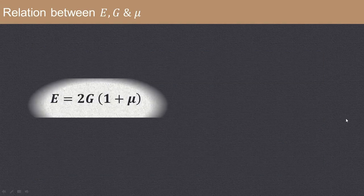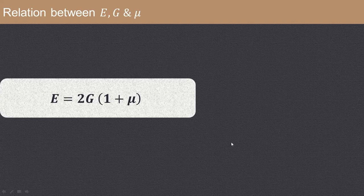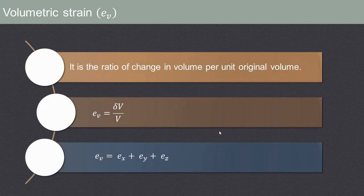The relation between modulus of elasticity and modulus of rigidity is E equals 2G(1 + mu). Now we define volumetric strain, denoted EV, as the ratio of change in volume per unit original volume — that is delta V upon V. Since volume is three-dimensional, it equals the sum of strains in X, Y, and Z directions.